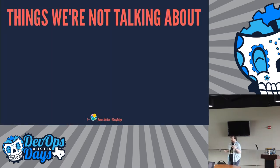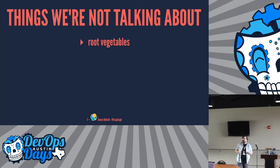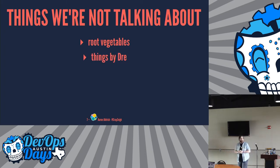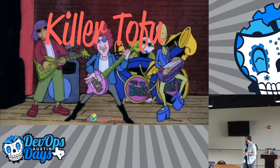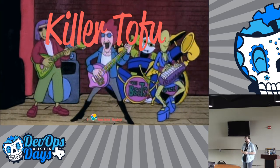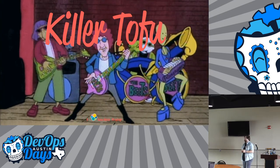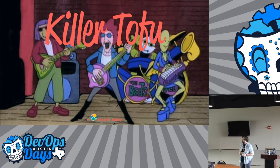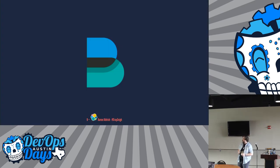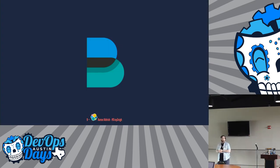First, things we're not discussing: root vegetables — Beats are not that in this context. Things by Dre are also not discussed. Nor will we be talking about cartoon bands from 90s TV shows. But this logo is what we're discussing — it's an Elastic project called Beats.